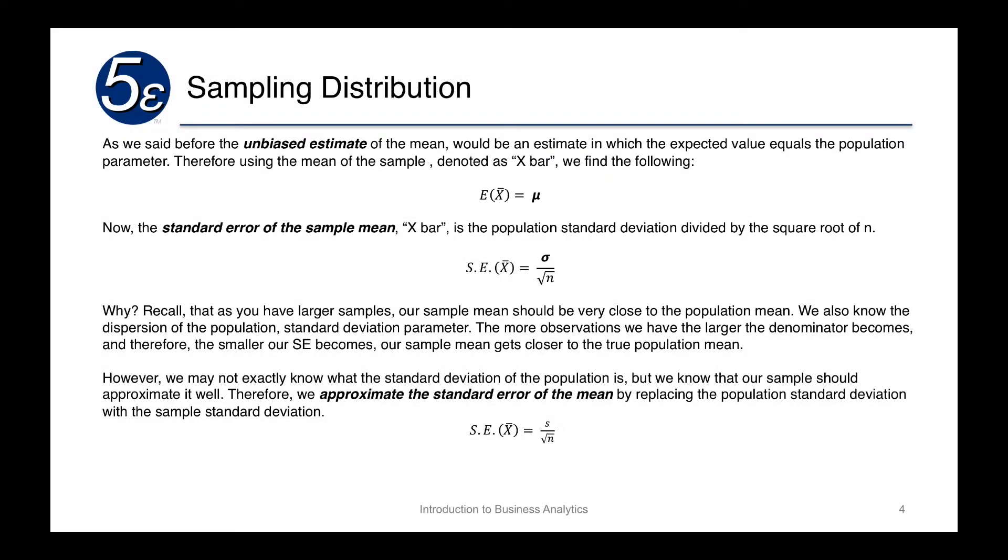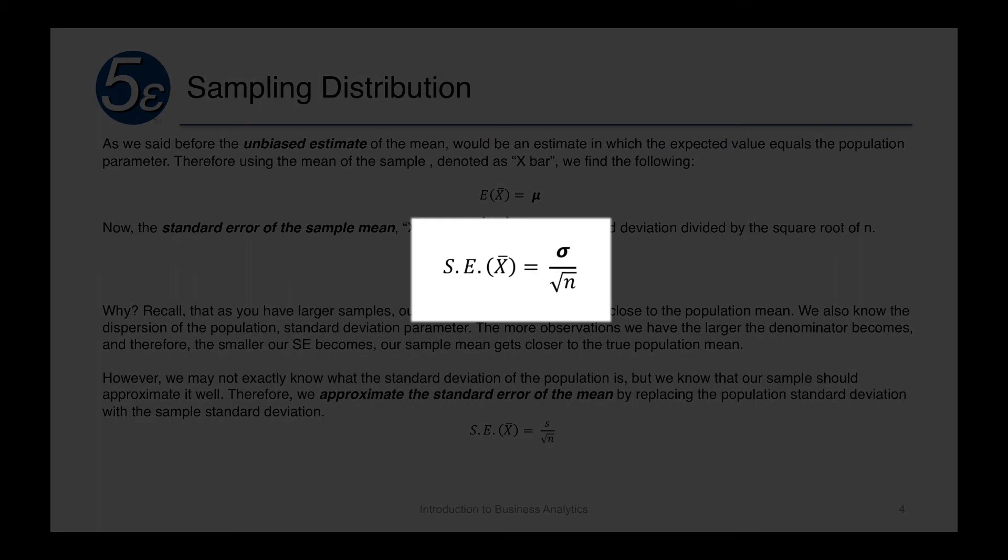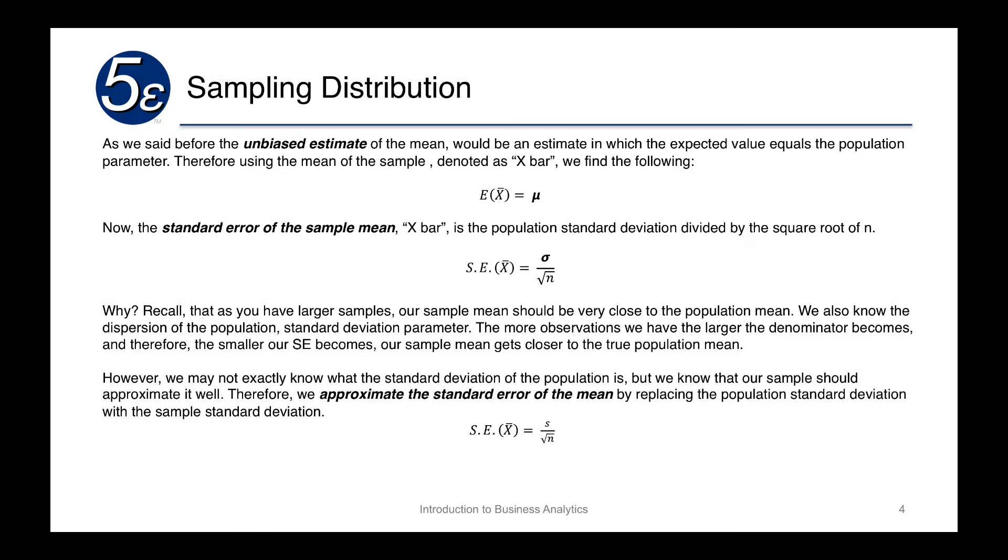Now the standard error of the sample mean is the population standard deviation, which is denoted by sigma, divided by the square root of n. And this is basically telling us the approximate error of our mean, which is based on the amount of data you have. The more data we have, the larger that denominator will be, and once that gets larger, it will begin to reduce the standard error.